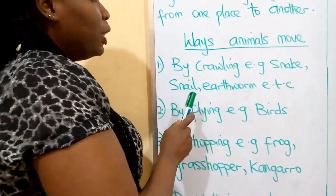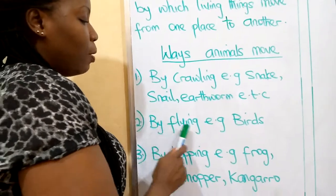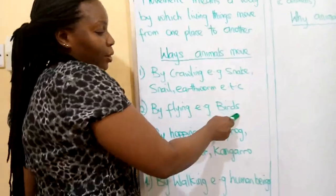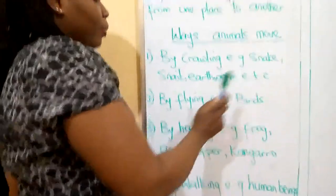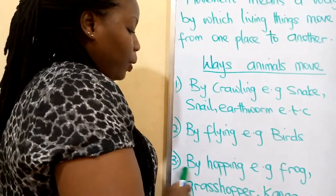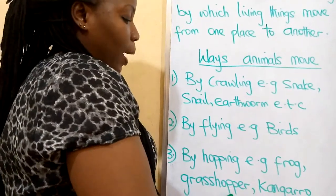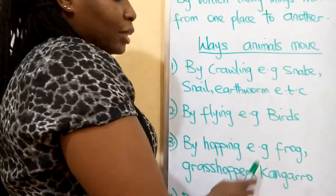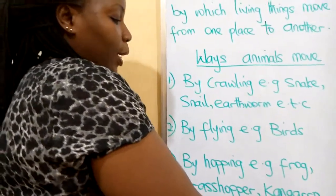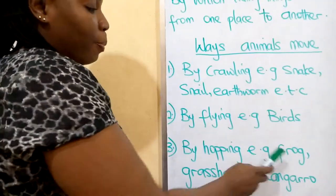Number two: another way animals move is by flying. By flying. And you should know your birds — your birds will fly. Number three: by hopping. And you know your frogs hop. Grasshopper and your kangaroo — all these are examples of animals that hop. Your frog, your grasshopper, and your kangaroo. There are so many of them.